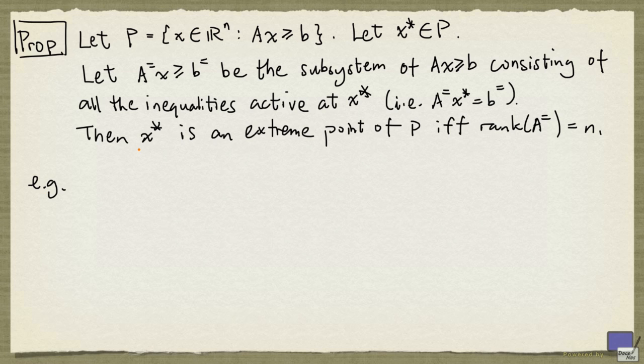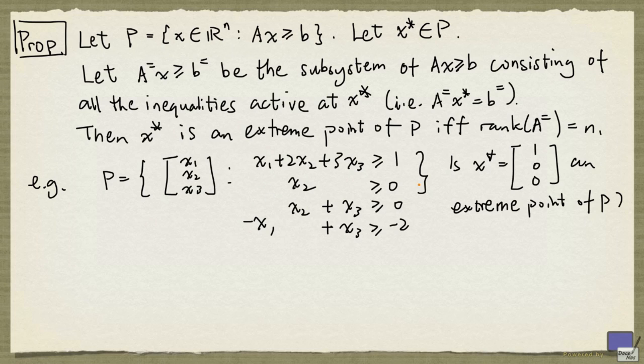Let's take a look at an example. Suppose that my polyhedron P is given by this. Is x* equal to (1,0,0) an extreme point of P? First we need to make sure that x* is a point in P. And it's clear that it satisfies all these inequalities.